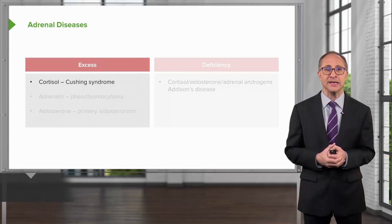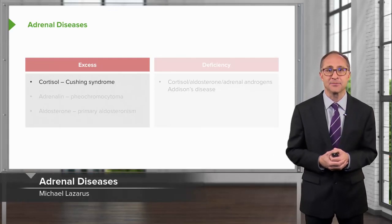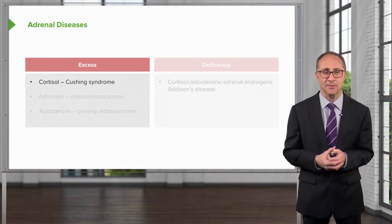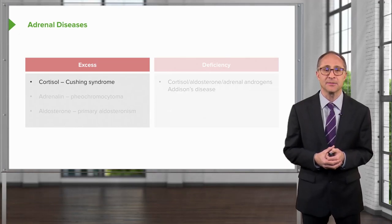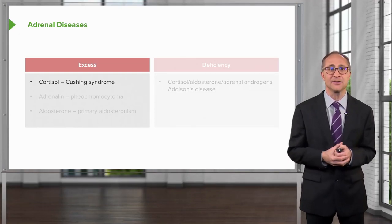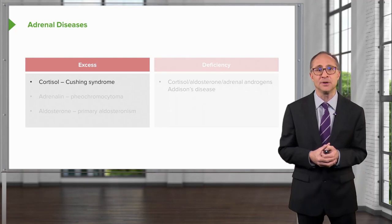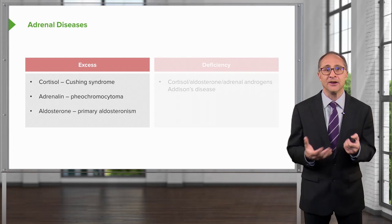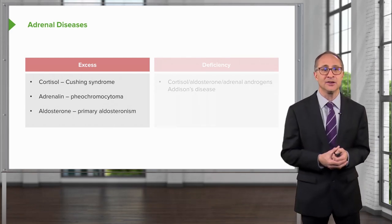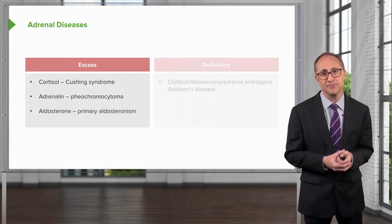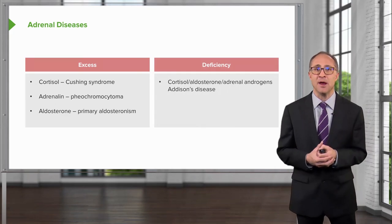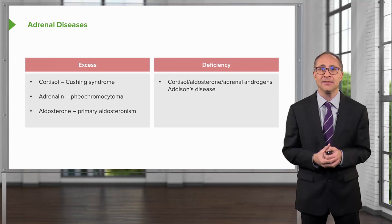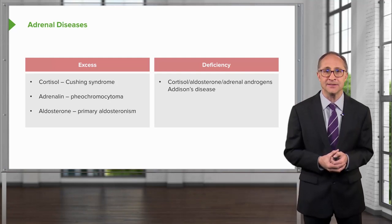Let's talk about adrenal glands. We're going to review adrenal excess and adrenal deficiency, starting with adrenal excess. These manifest as excesses of cortisol in Cushing syndrome, excesses of adrenaline in pheochromocytoma, and increased aldosterone in the condition known as primary aldosteronism. Deficiency states primarily involve all three hormones as well as androgens, and this condition is known as Addison's disease.